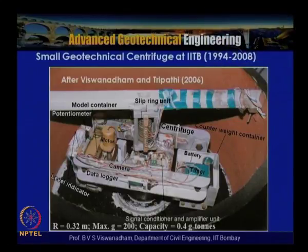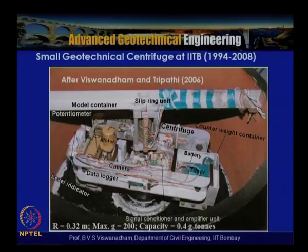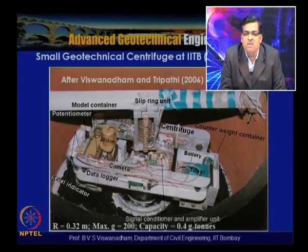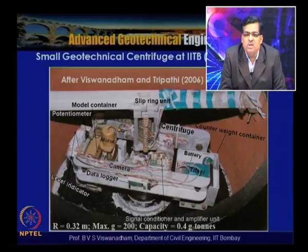The small geotechnical centrifuge at IIT Bombay existed between 1994 and 2008. A bio-centrifuge was converted into an engineering geotechnical centrifuge with a radius of 0.32 meters, maximum g of 200, and capacity of 0.4 g·tons. The maximum payload was very low — approximately 2.5 kg. This facility was used for geotechnical instruction as well as research problems that could be investigated within the allowable errors of these small centrifuges.